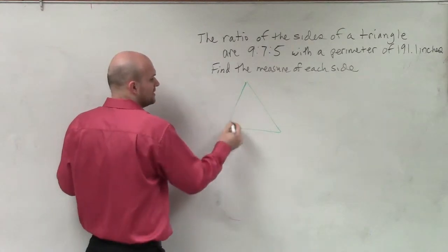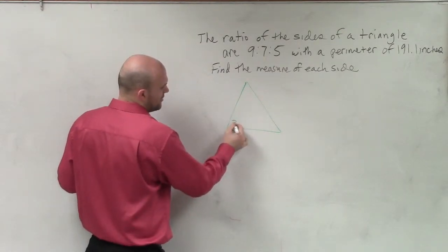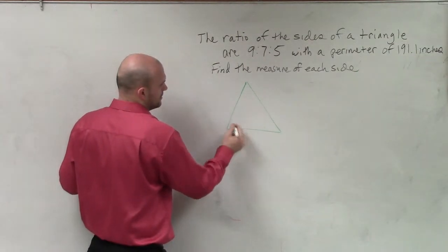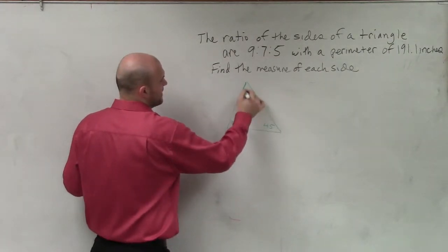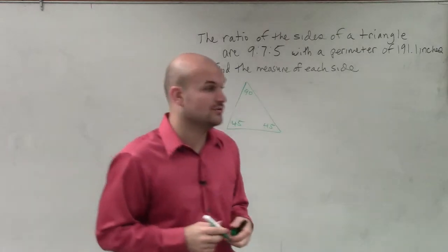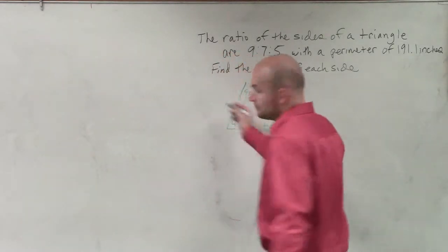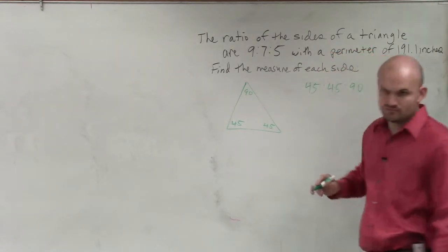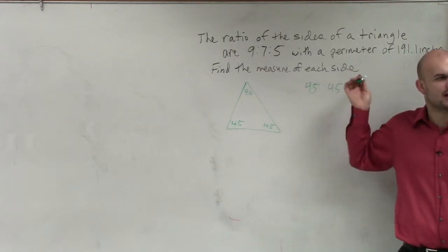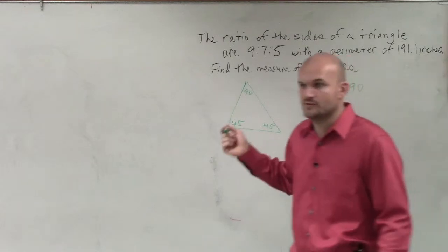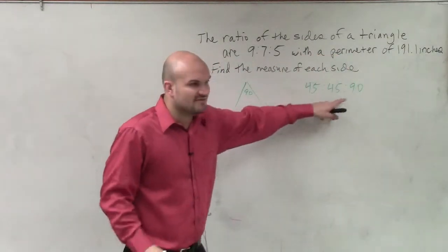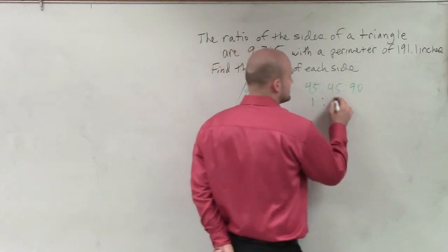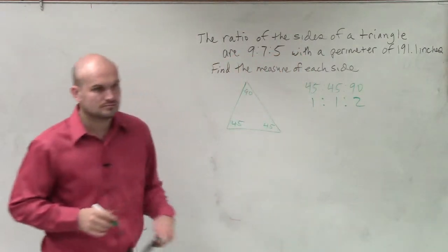Let's talk about the angles for a second. Let's say this is 45, 45, and 90. If I was going to write a ratio of these angles, the ratio would be 45 to 45 to 90 — that's how they compare. But is that simplified? No. You can divide 45 into all of those. So really, the ratio of the sides is 1 to 1 to 2.